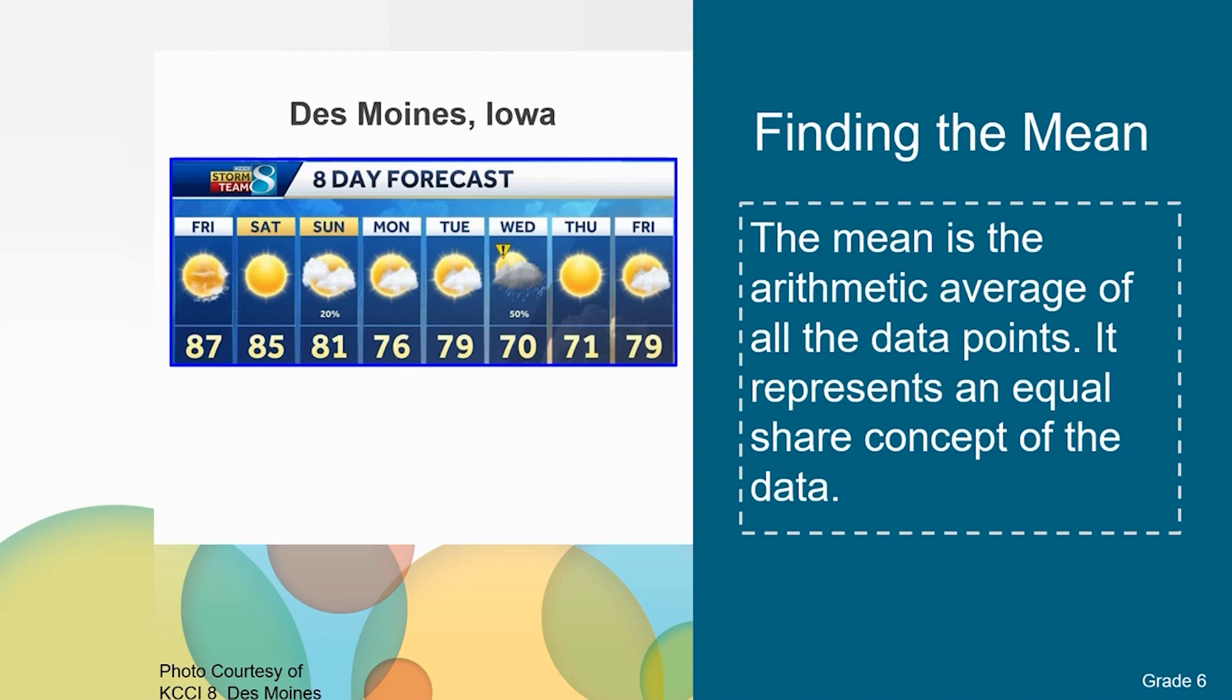So first we're going to find the mean. The mean is the arithmetic average of all the data points. To do this, I can take the sum of all eight values. When I add each data point, the sum is 628. Then I can divide the total by the number of values or data points in the set. The forecast gives me eight temperatures or data points. So I will divide the total by eight. The mean for this set of data is 78.5 degrees.